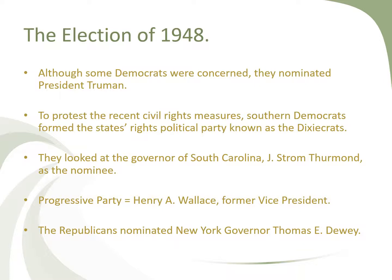Let's talk about the election of 1948. Although some Democrats were concerned about Truman's lack of progress, they did nominate President Truman for election. Southern states, many of which were against civil rights, protested Truman's recent civil rights measures by forming a states' rights political party known as the Dixiecrats. They nominated Strom Thurmond, the governor of South Carolina, to run against Truman. There was also the Progressive Party with Henry A. Wallace, a former vice president, and the Republicans nominated Thomas E. Dewey, the New York governor. So four different people were running for president in 1948.